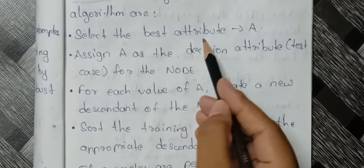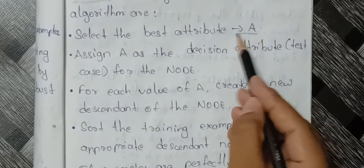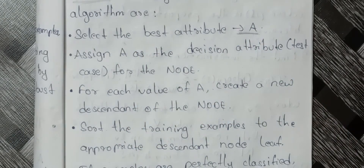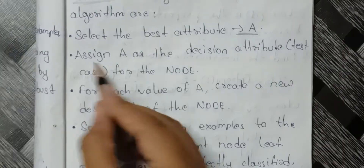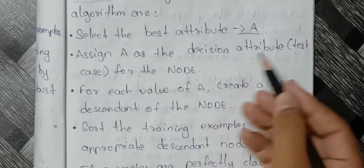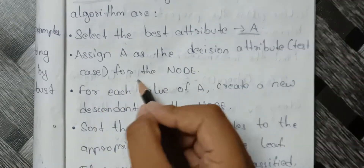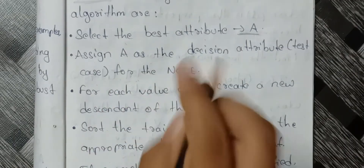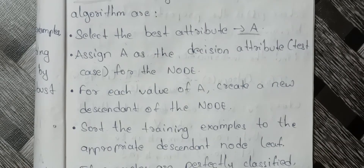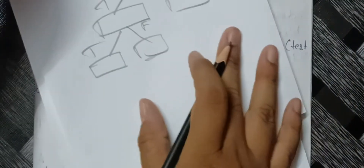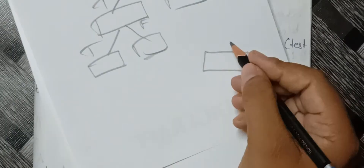First, select the best attribute A. We will select the best attribute and assign A as the decision attribute. This is going to be a test case for the node. We have a root node already — the root node is going to represent the dataset. The root node is compulsory.